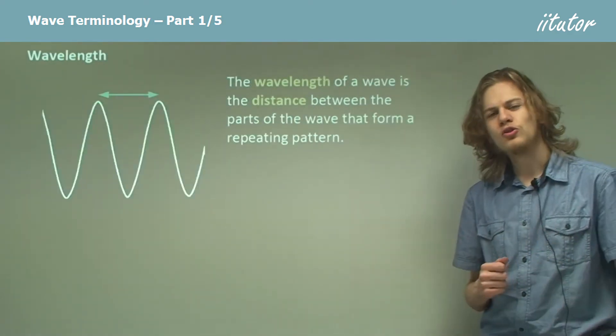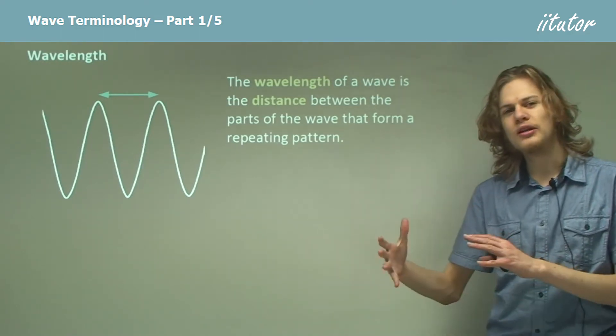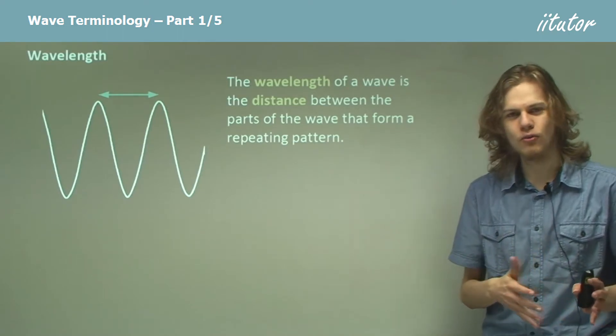So to start with, let's talk about the wavelength. The wavelength of a wave is the distance between two repeating parts of the wave.